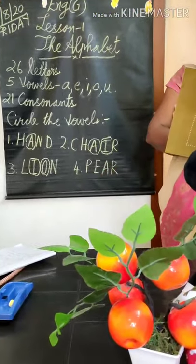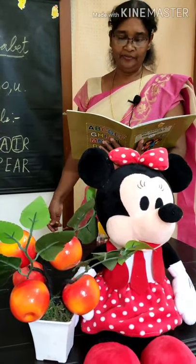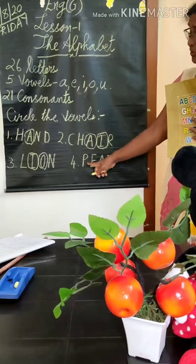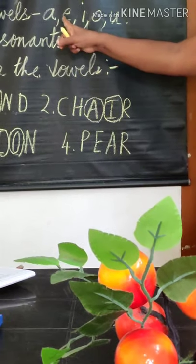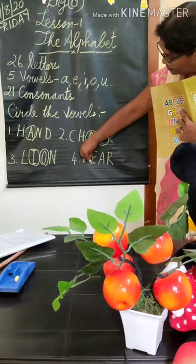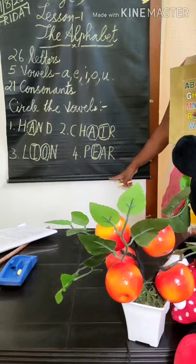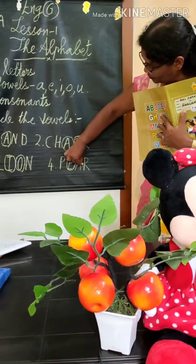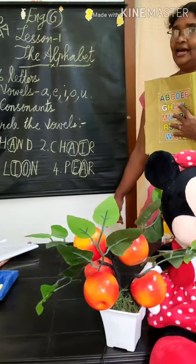Fourth and last one is PEAR. Pear is a fruit. P is a consonant. E is a vowel — circle E. A is a vowel — circle A. R is a consonant.